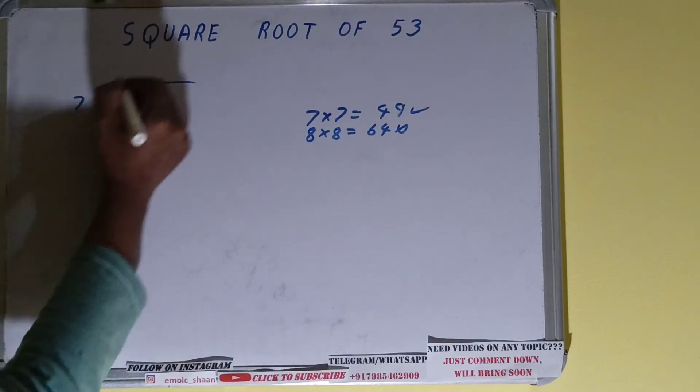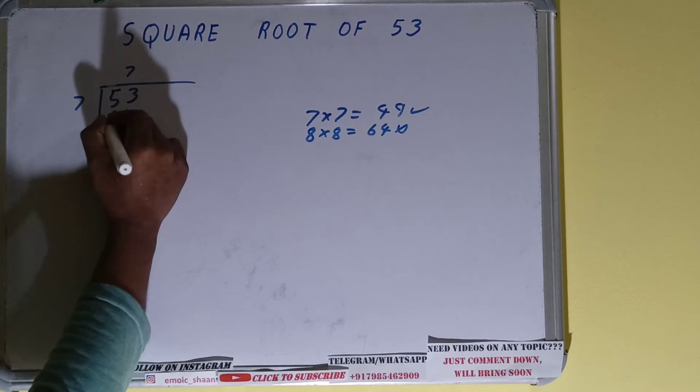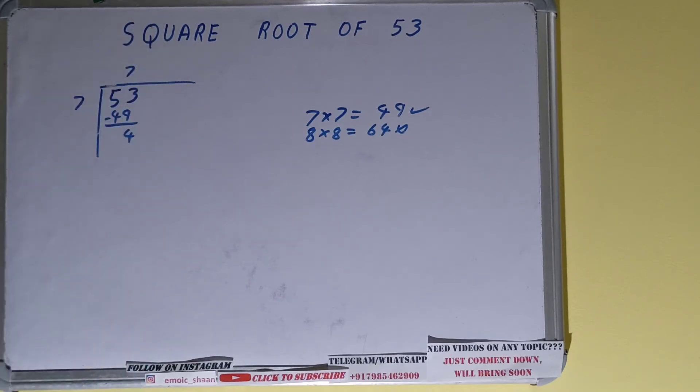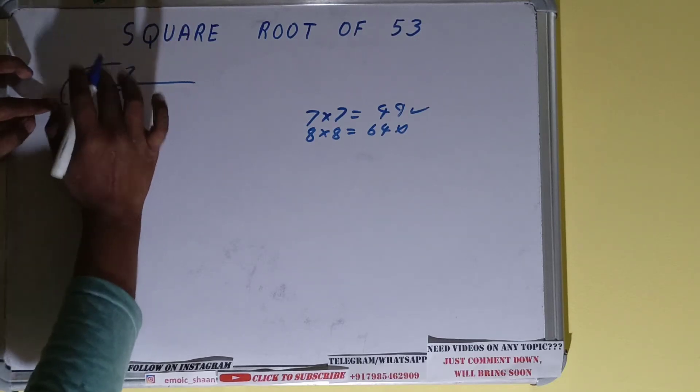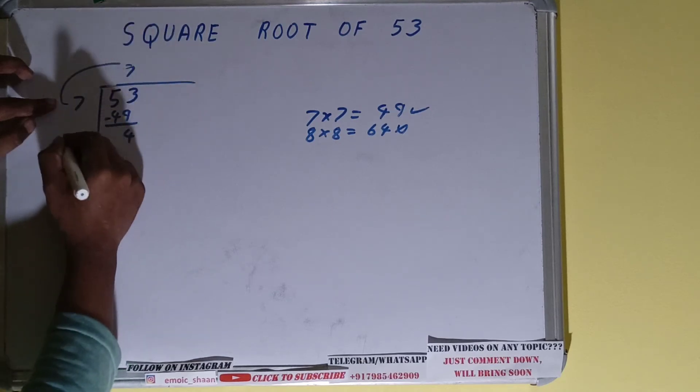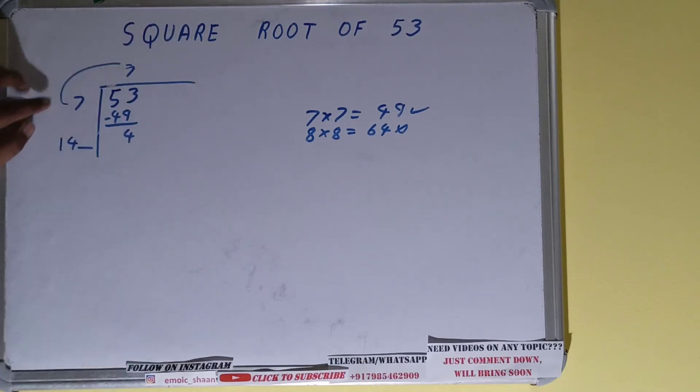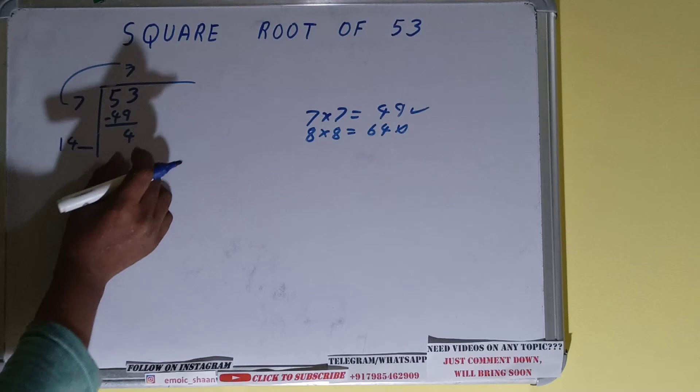Okay, so 7 here and 7 here, 49 down, left with 4. Okay, now what you need to do with the divisor is add whatever you multiply it with. So we multiplied with 7, right? So add, put 7 plus 7 is 14, and keep one digit extra.